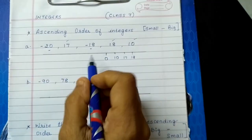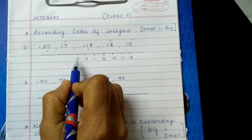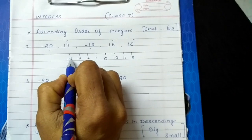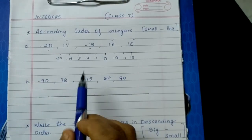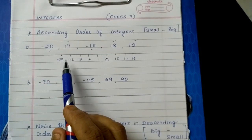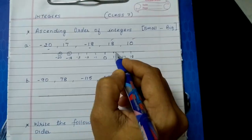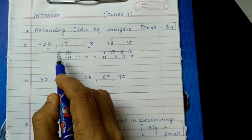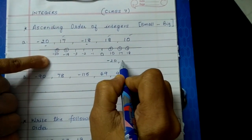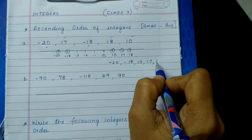Now let us look at the negative numbers. When you write negative, you write minus 1, minus 2, and keep going minus 3. So which will come first, minus 18 or minus 20? Minus 18 will come first and then minus 20. Now we have placed the numbers on the number line. Ascending order means moving from left to right, so the answer is: first minus 20, then minus 18, then 10, 17, followed by 18.